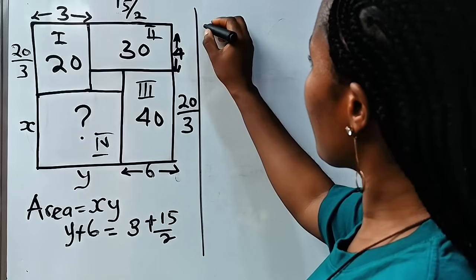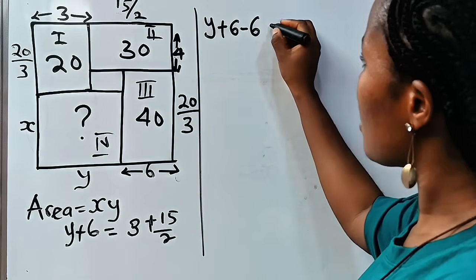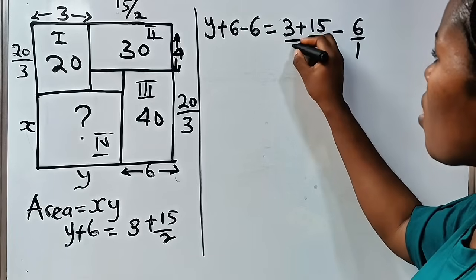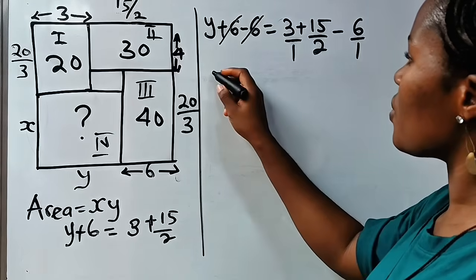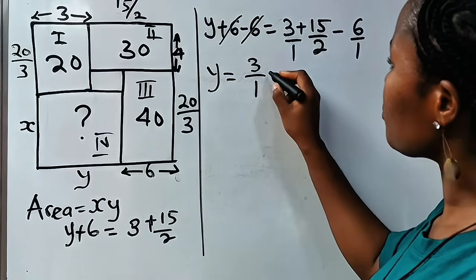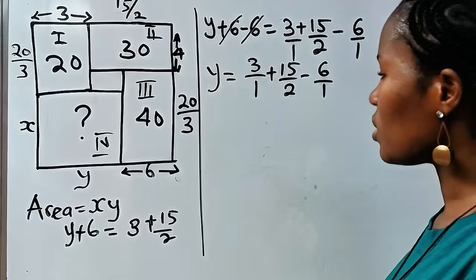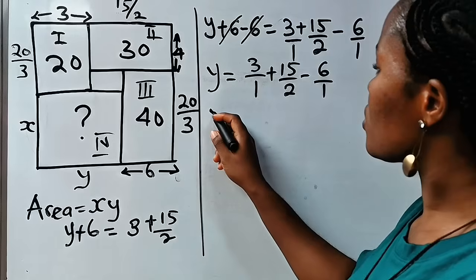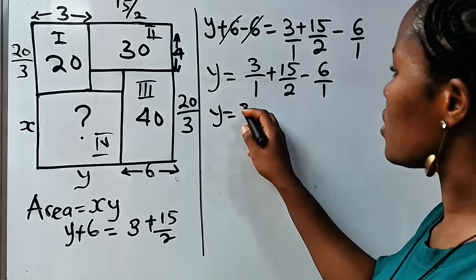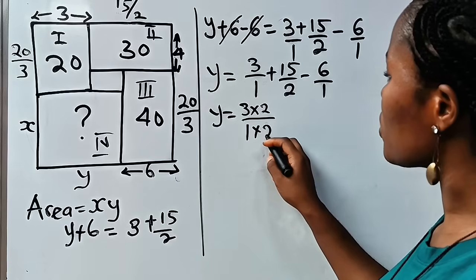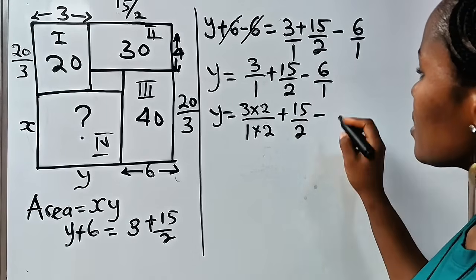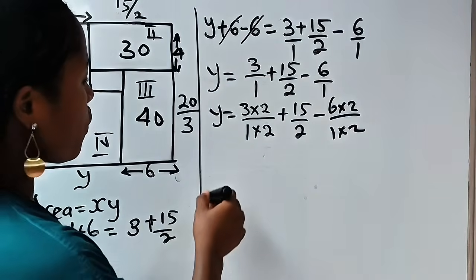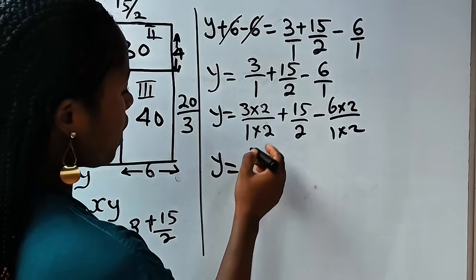Subtracting 6 from both sides gives us y is equal to 3 plus 15 over 2 minus 6. We write this as 3 over 1 plus 15 over 2 minus 6 over 1. The LCM of 1 and 2 is 2, so we make all denominators 2. Multiplying 3 by 2 over 1 by 2 gives 6 over 2, plus 15 over 2, minus 6 times 2 equals 12 over 2.